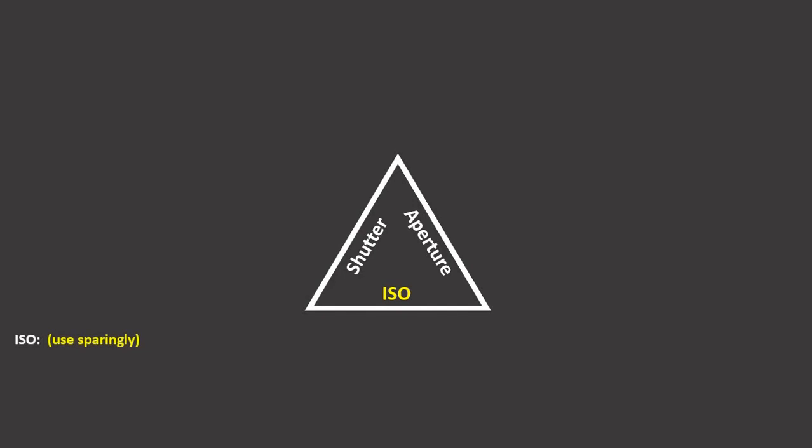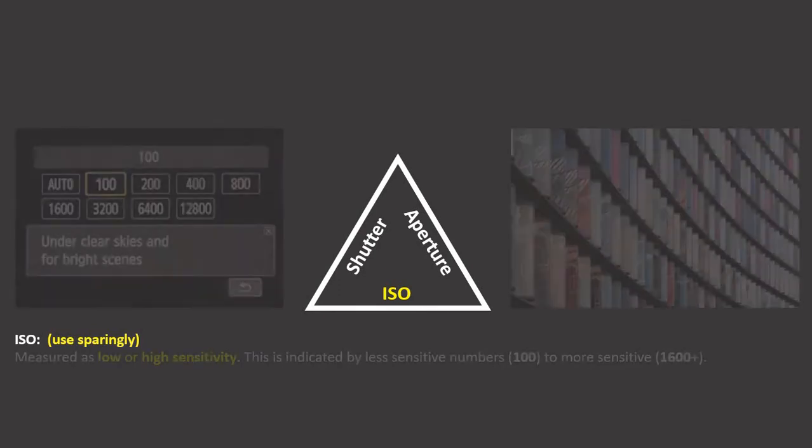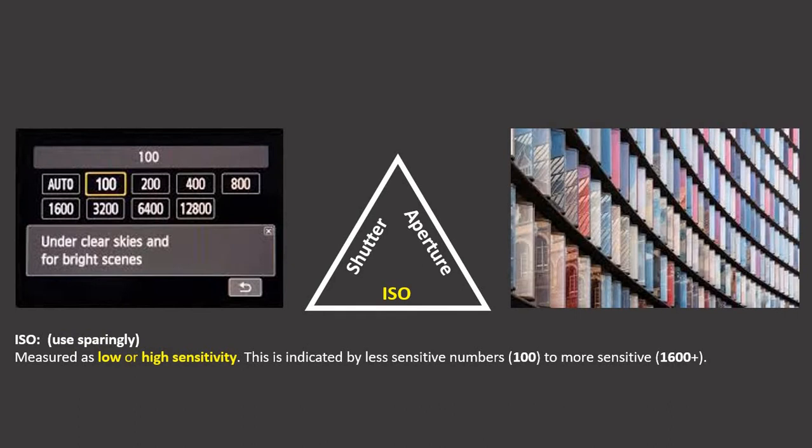Lastly we need to look at the ISO, and this is to be used sparingly or not at all — it can be used creatively, but this is the one which causes problems on cheap cameras. On a cheap camera the camera tries to guess how much light you need, and if you're in a dark room it will give you a higher ISO so you can continue using your camera. Then you get the after effects of ISO, which is to do with graininess.